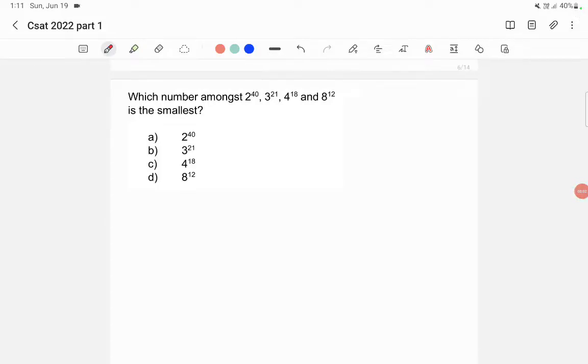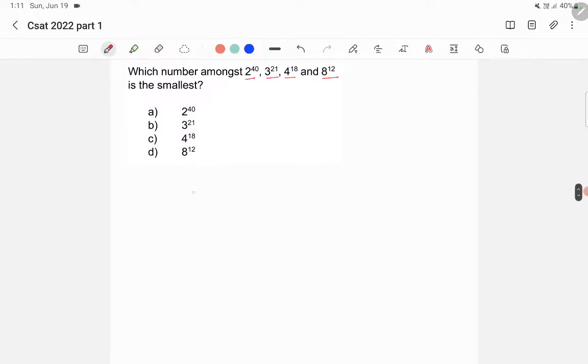In this question we have to find the smallest number among 2 raised to 40, 3 raised to 21, 4 raised to 18, and 8 raised to 12. So we have 2 raised to 40, we have 3 raised to 21, we have 4 raised to 18, and we have 8 raised to 12.